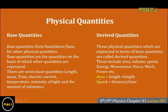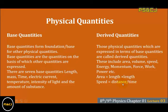For example, area is equal to length multiplied by length. Length is a base quantity, and area is the derived quantity. Similarly, speed is a derived quantity: speed equals distance divided by time. Distance is the length between two points, which is a base quantity, and time is also a base quantity — so speed is derived from these two base quantities.